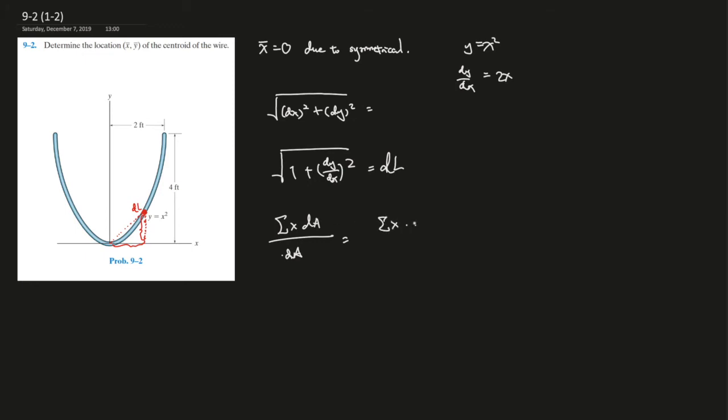So x times dl over dl. So we already know what dl is. Let's just use x times dl: 1 plus (dy/dx) squared.